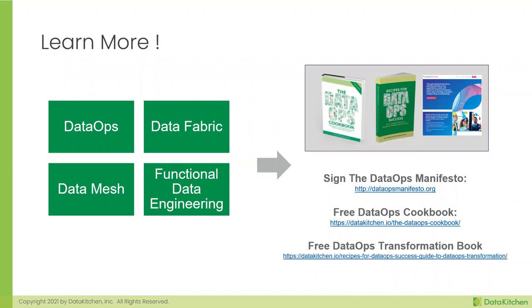Does the data mesh approach envision different technology by domain, different governance, or different analytics stacks altogether? There's a debate. In the software industry's application of domain-driven design — sometimes called microservices — some organizations have allowed teams to pick their own tech stack. You end up with one team in Python, another in Go, a third in Elixir. As a manager, that may not be the best thing, because people have to learn not only a different domain but a whole set of tools.